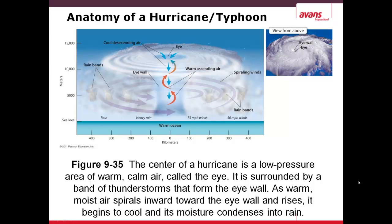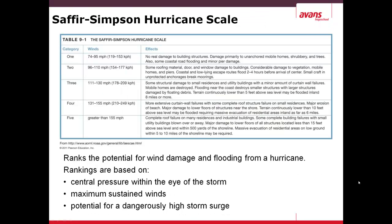On the upper right you see a view of a hurricane or typhoon from above. Hurricanes and typhoons can be classified on the Saffir-Simpson scale. There are five categories ranging by the speed of the winds. These rankings are based on central pressure within the eye of the storm, maximum sustained winds, and potential for a dangerously high storm surge — which is the amount of water that is raised when it reaches the shore.